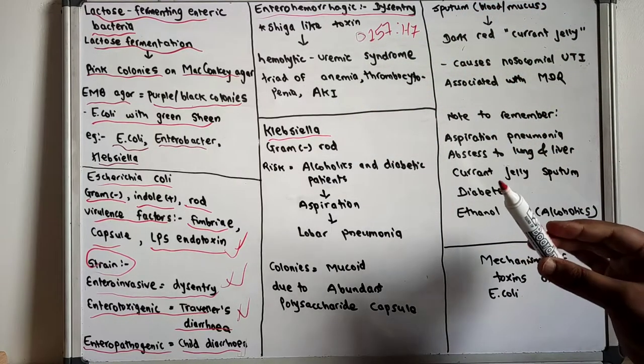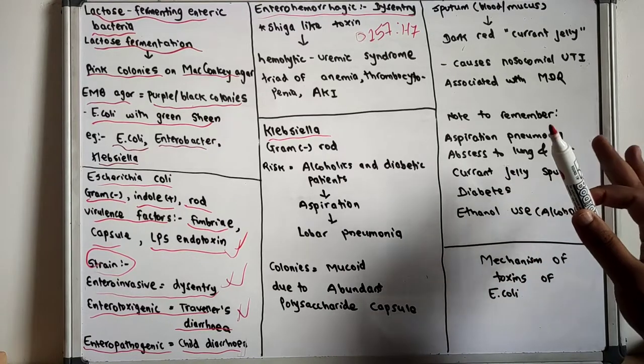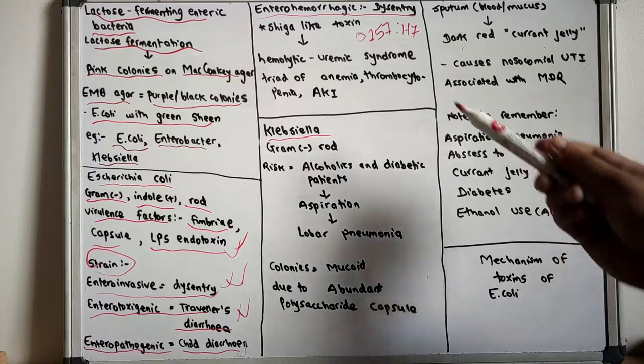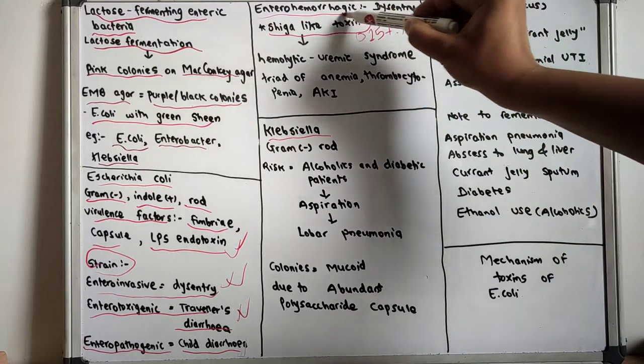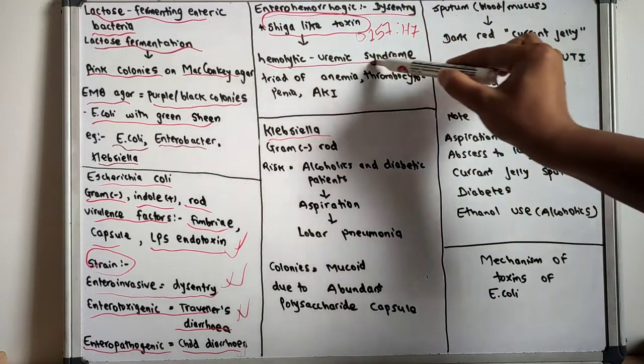It is the most common serotype found in the United States and is often transmitted via undercooked meat, raw and leafy vegetables. You have to know that the toxin is shiga-like toxin. The shiga-like toxin causes hemolytic uremic syndrome.